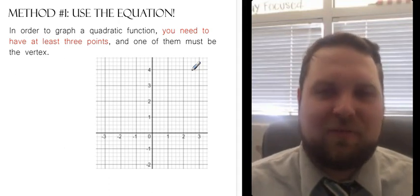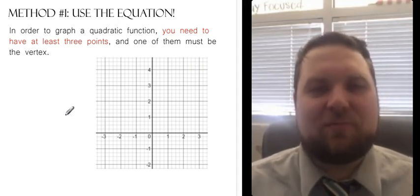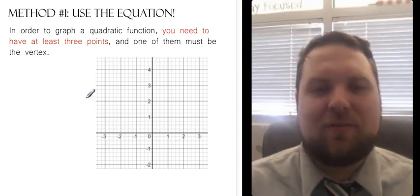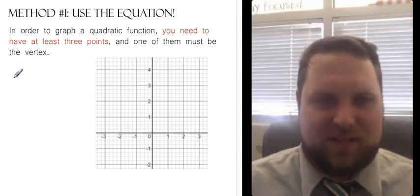So the first way we're going to graph it is by using the equation. So in order to graph a quadratic function, we've got to have at least three points. Remember for a line, I just need two points and I connect them. For a quadratic, I want at least three points and I want at least one of them to be the vertex.